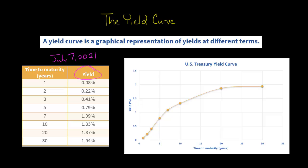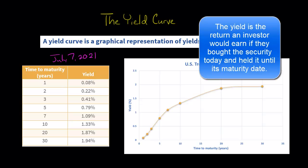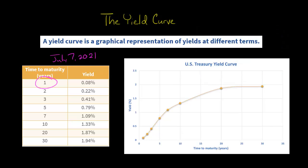What is even a yield? The yield is just the rate of return that an investor would expect to receive if they had bought the financial instrument on that date and held it to its maturity. So for a one-year Treasury bill on that date, the yield was 0.08%.